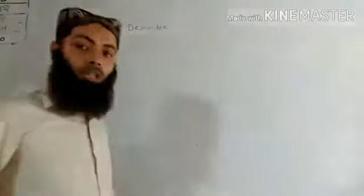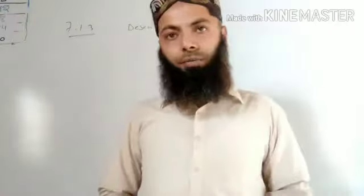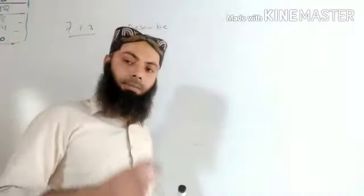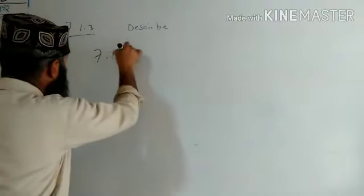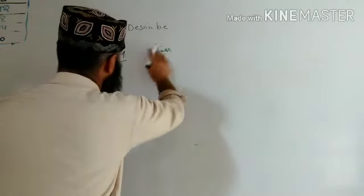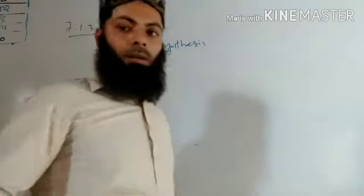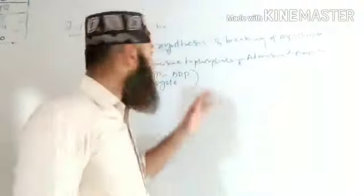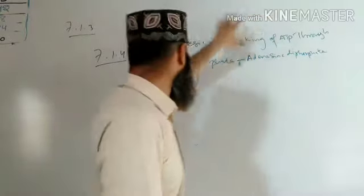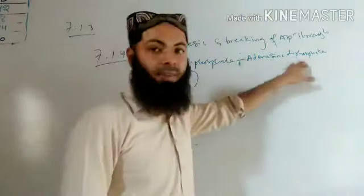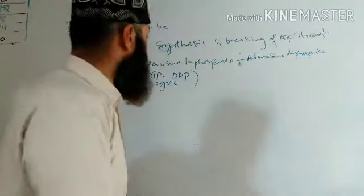The next SLO is 7.1.4: describe the synthesis and breaking of ATP. This covers the cycle between adenosine triphosphate ATP and adenosine diphosphate ADP.